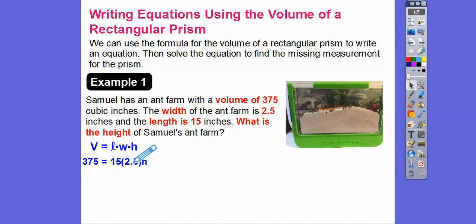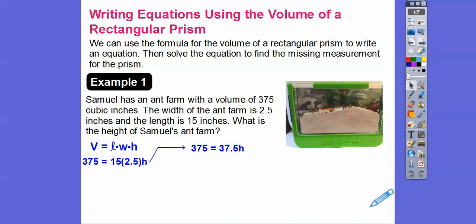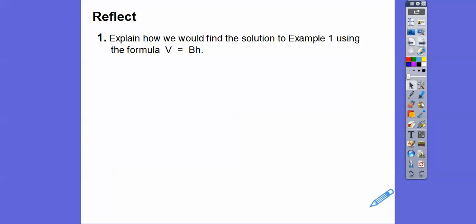So if we multiply 15 times 2.5, that's going to get us 37.5. And then we divide both sides by 37.5, and we get h equals 10. Now, what does that mean? Always answer it in the context of the problem. That's the height and it's in inches, so the height of that ant farm is 10 inches. Always answer it in terms of what the problem is.